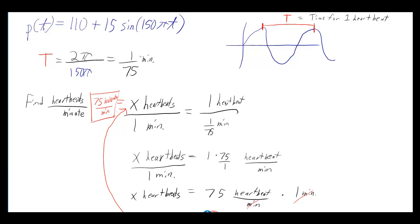And if you're asked to find the heartbeats per minute, well, we know that 1/75 of a minute is how long it takes for you to get one heartbeat. And if we want to know the amount of heartbeats for one minute, then you set up a proportion of 1 over 1/75 equals x over 1.